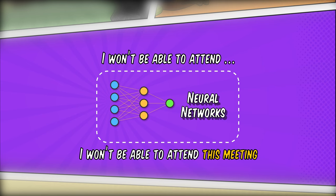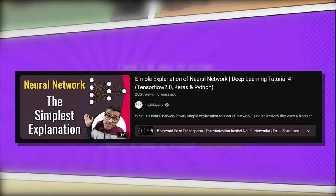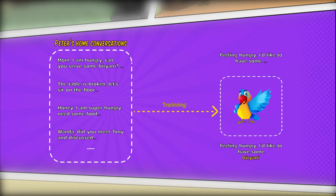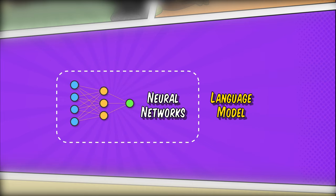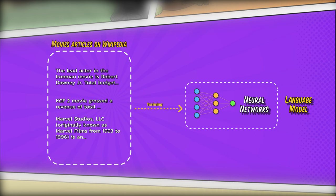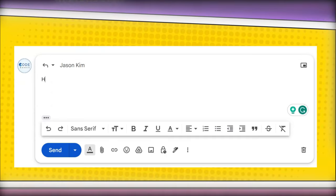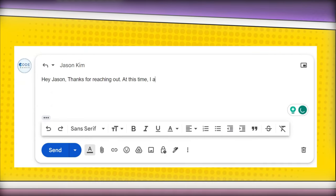For a simple explanation of a neural network, please watch this particular video. Just like how Buddy is trained on Peter's home conversations dataset, you can have a language model that is trained on, for example, all movie-related articles from Wikipedia, and it will be able to predict the next set of words for a movie-related sentence. Gmail autocomplete is one of the many applications that uses a language model underneath.